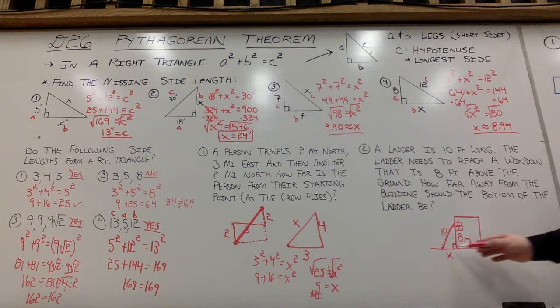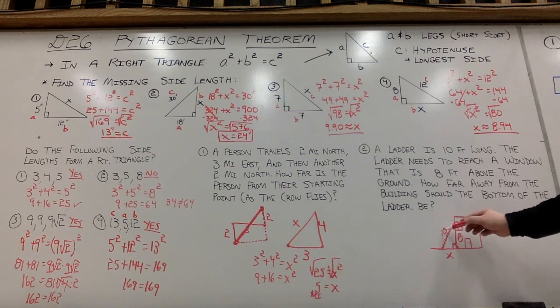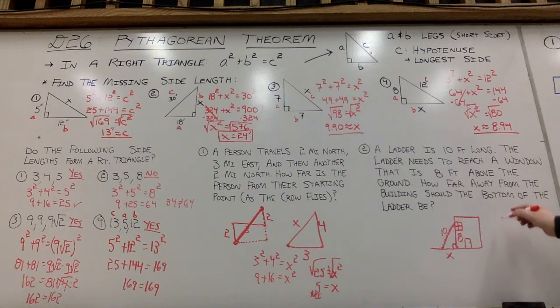It needs to reach a window that is 8 feet above the ground. So how far away from the building should the bottom of the ladder be placed? So I'm trying to find this leg length. Across from the 90 is my hypotenuse, which is 10.